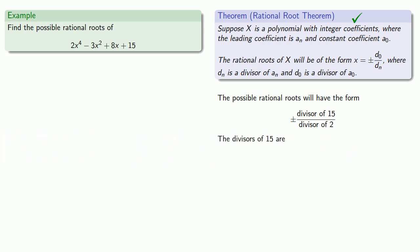So the divisors of 15 are... The divisors of 2 are... And let's try to find these possibilities systematically. I'll take my divisors of 15 over 1, and this gives me the possibilities. I can also take those divisors of 15 over 2, and that gives me the possibilities.